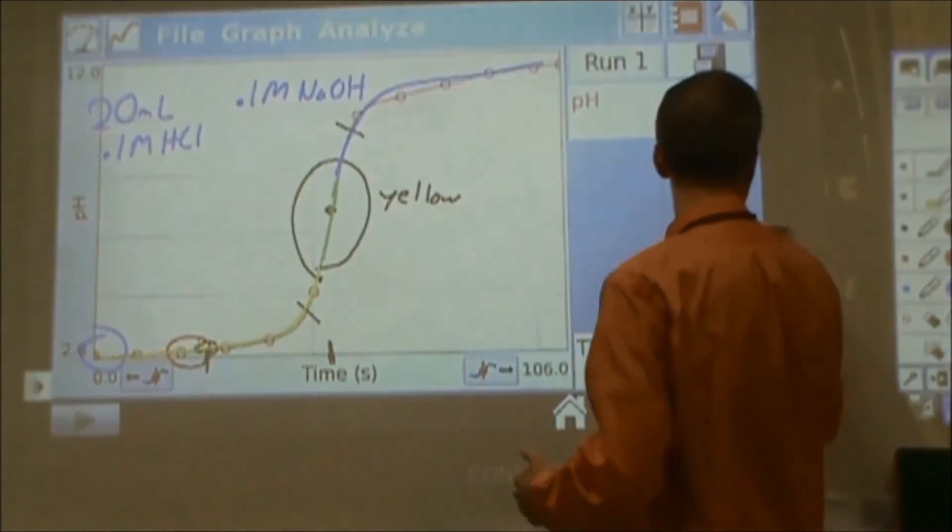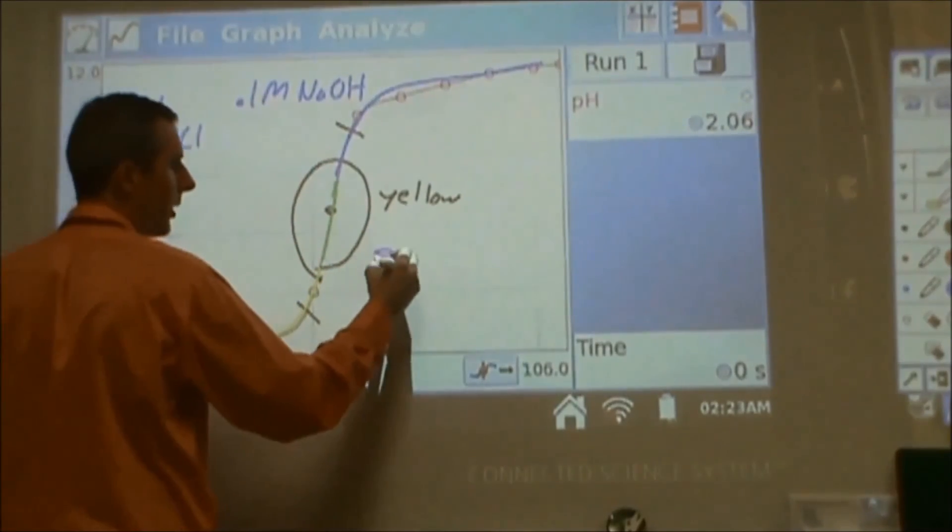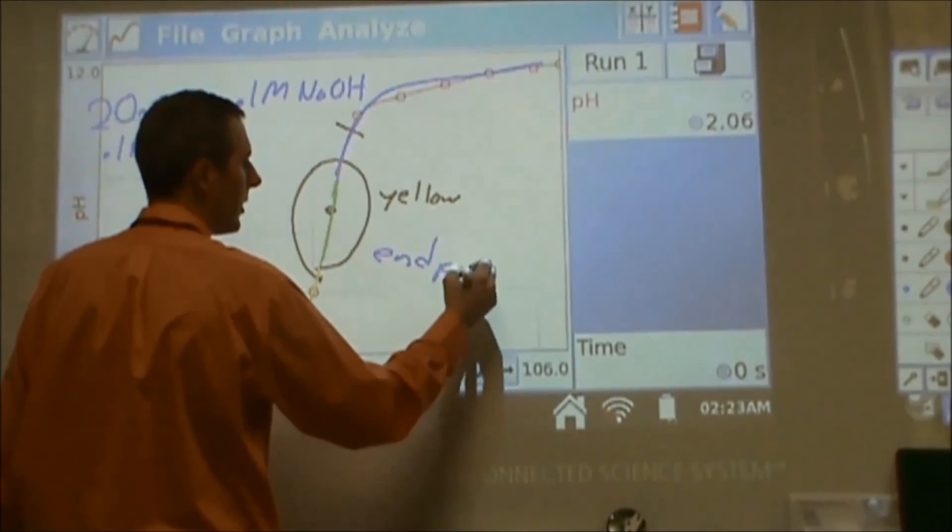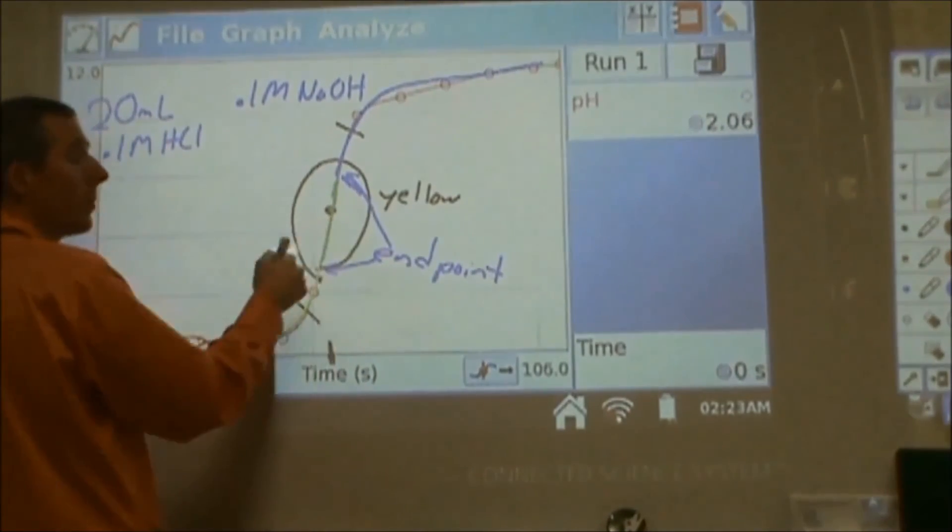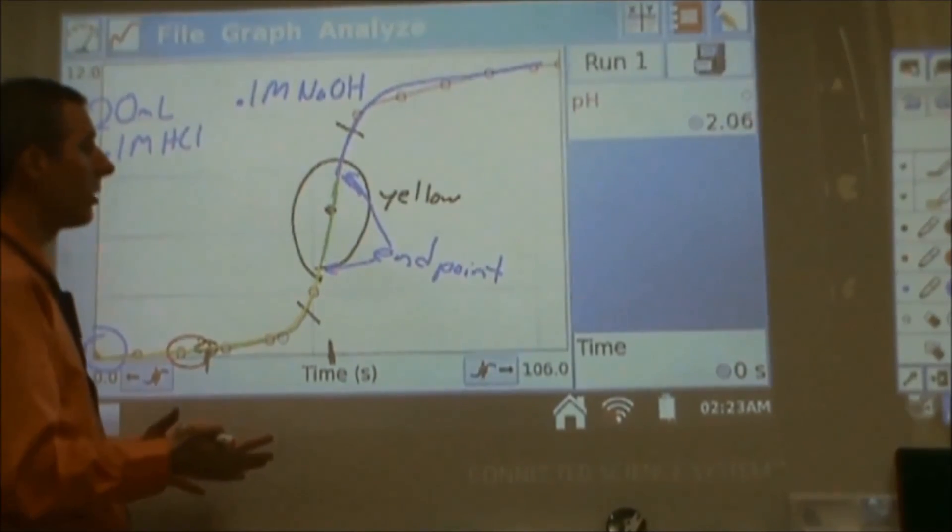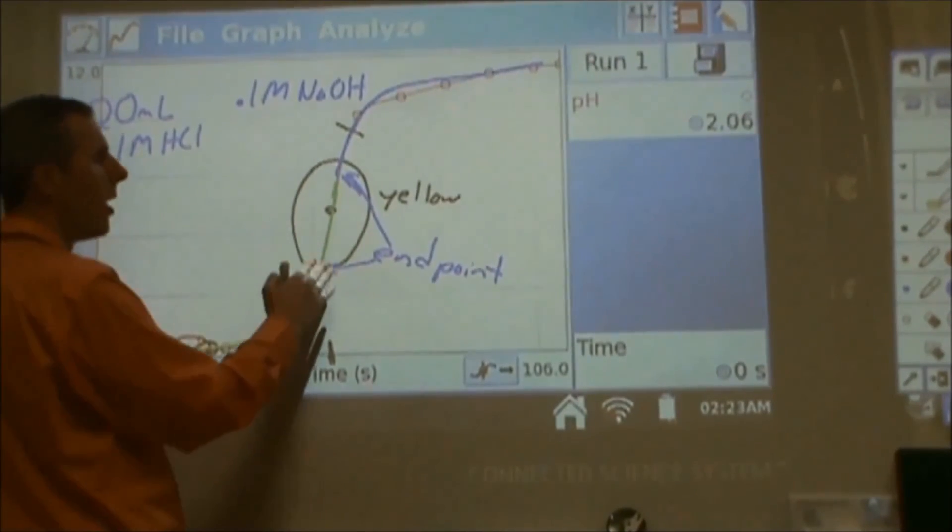And so we've ended our titration in terms of color change. Our endpoint is when this color change is occurring from here to here, right where my equivalence point is, right when the equal amounts of acid and base. So in this particular case, this would have been a really easy thing to do.